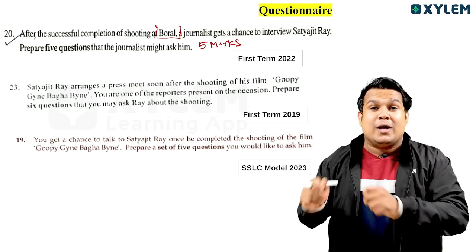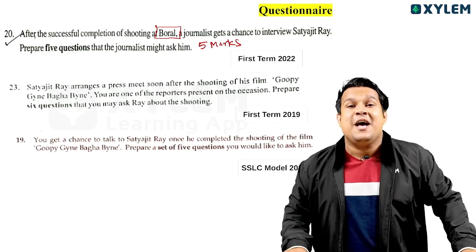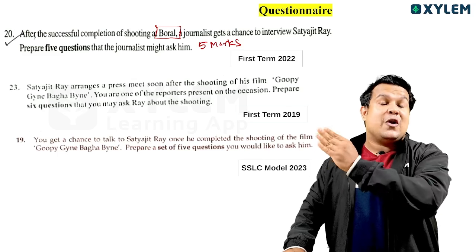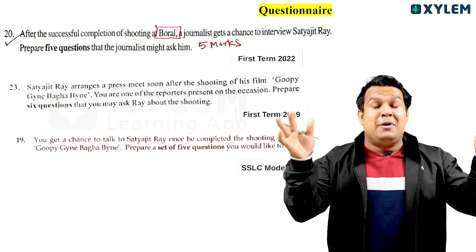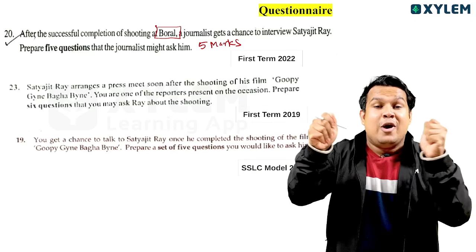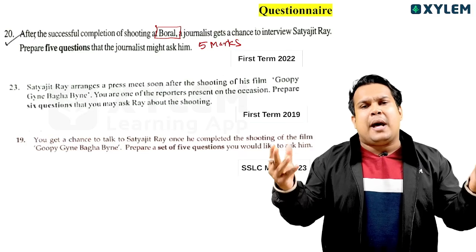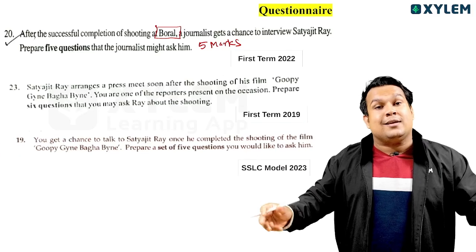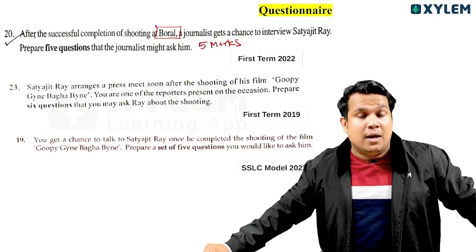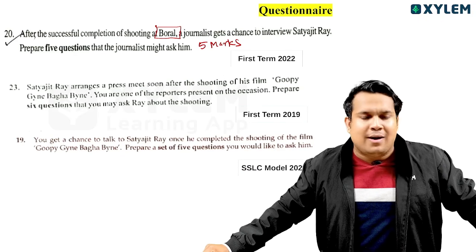They have included this particular question for a very specific reason — they want to see whether you have gone through the textbook or not. You have to talk about the context. For instance, asking Satyajit Ray 'What is your opinion about Indian cinema?' — that is not relevant.